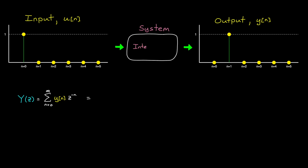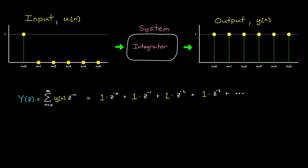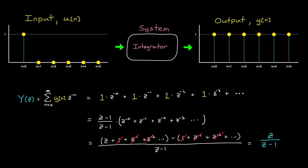Now let's assume that the system is an integrator, meaning the output is the integral of the input, which produces a value of 1 for all time. If we multiply each sample by its corresponding Z variable and then sum them all up, we see that the result is this infinite geometric series: Z to the minus 0, plus Z to the minus 1, plus Z to the minus 2, and so on. Working with an infinite series like this isn't convenient, so we can use a little algebra and refactor this into a ratio of polynomials, which is the Z-domain representation of an integrator.